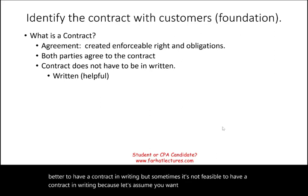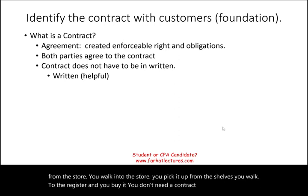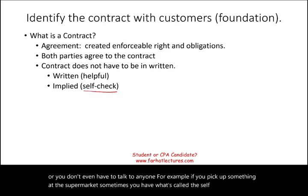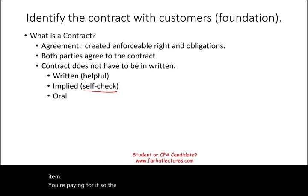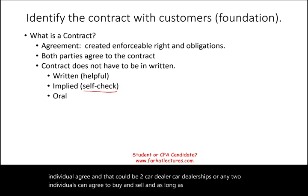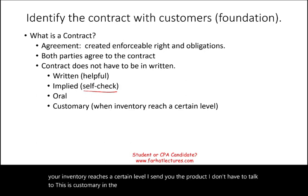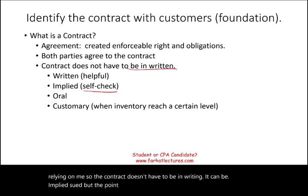For example, when you walk into a store, pick an item off the shelf, and pay at the register, you don't sign anything — that's still a contract. Even using self-checkout at a supermarket is a contract: you take the item and pay for it, so the contract is implied. Sometimes the contract is oral — two individuals or businesses agree to buy and sell based on trust. Or it can be customary, such as when your inventory reaches a certain level and your supplier automatically sends the product.